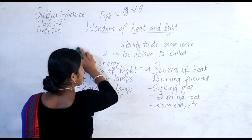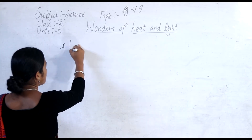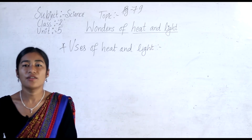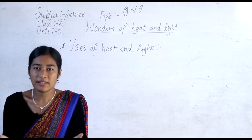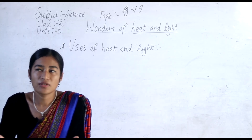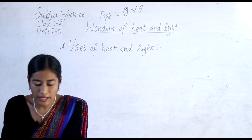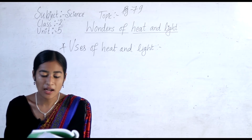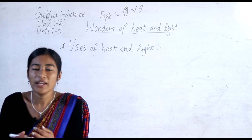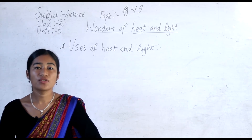Now we will go to the next topic: Uses of Heat and Light. Heat and light are very important. If there is no light, we cannot see anything. If there is no heat, we cannot get warm, we cannot dry our clothes, and we cannot cook food. So both of them are very important in our daily life. Now all of you go to page number 81. What happens if there is no light? Obviously it will be dark — we need some sources of light to see things in the dark, such as electric lamps, torchlight, and candles.